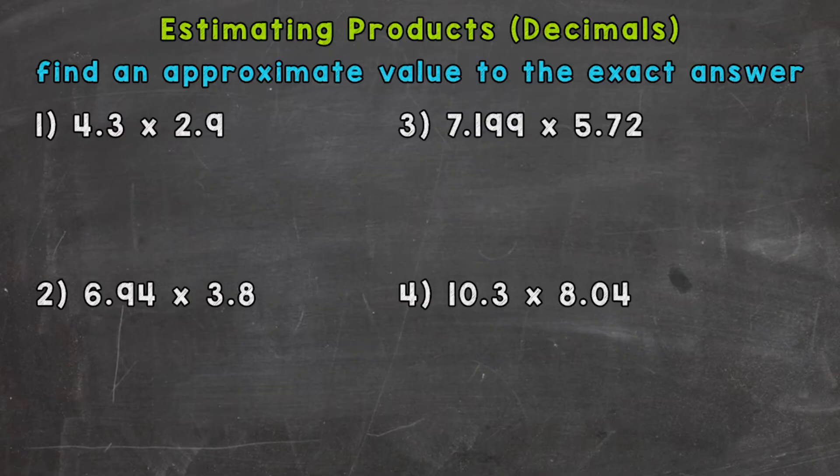So 4.3, let's take a look at the ones place, look next door. So we need to ask ourselves, is that going to round up to 5, or stay the same at 4? Now 4.3 is going to be closer to 4, that 3 says stay the same.